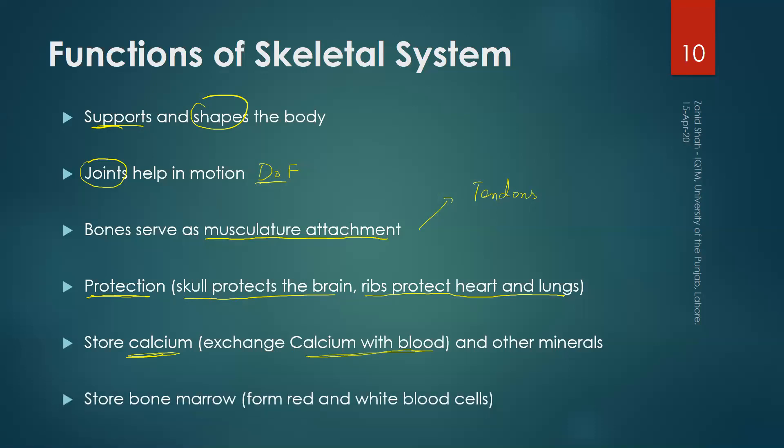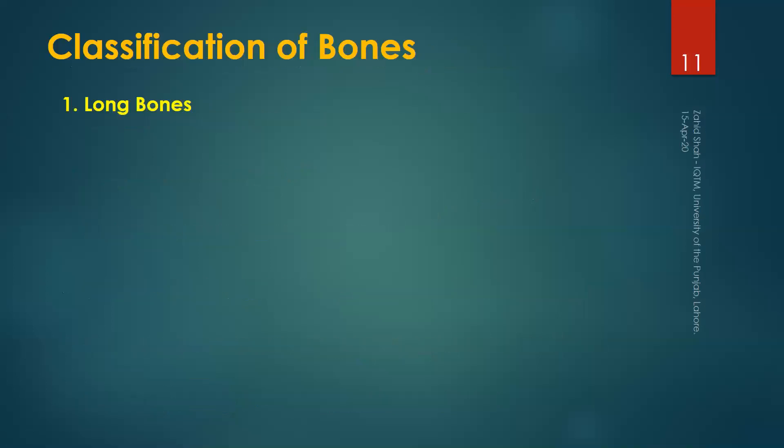Finally, a very important function of the skeletal system is the bone marrow. You all know that our red and white blood cells are formed in the bone marrow. This was a brief overview of the skeletal system, its structure, its two types, and its functions.